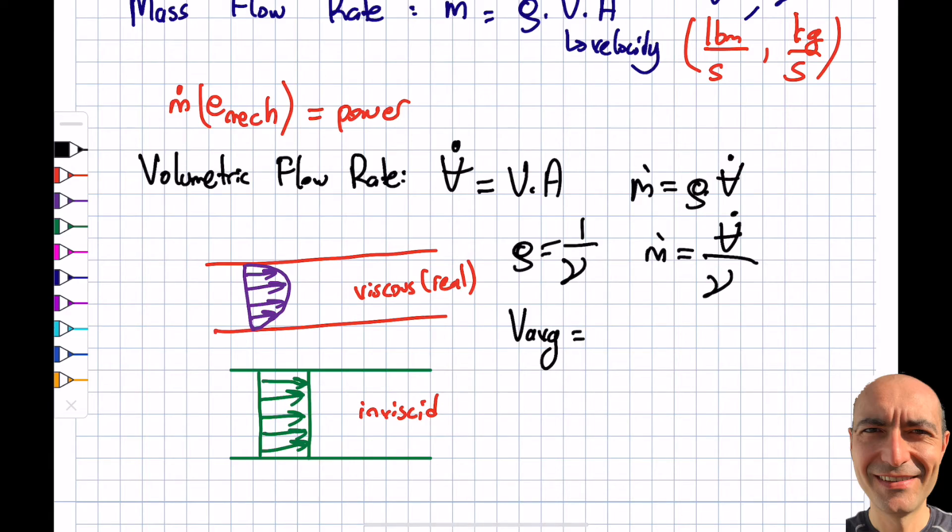We use 'average' terminology, defined as the volumetric flow rate divided by the area. If I have a volumetric flow rate, you can see I get my V here - it kind of makes sense. I'm saying this is going to be the average, just use the average.